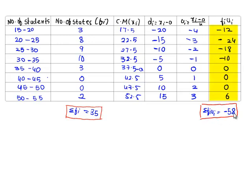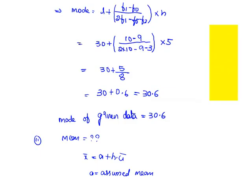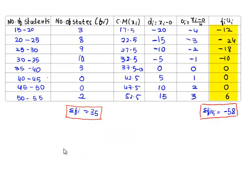Now as we know the formula for mean, that is x bar equals a plus h into u bar, where u bar equals sigma of fiui by sigma fi. We shall substitute the values in this, we get x bar equals a plus h into u bar.